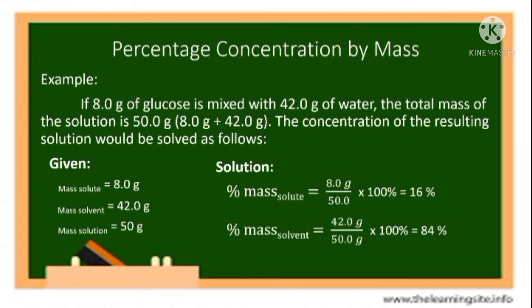As you can see, if you get the sum of the percentages of mass solute and mass solvent, it will always add up to 100%. That is 16% plus 84% equals 100%.